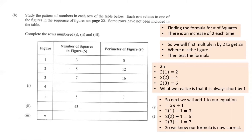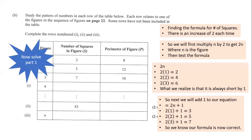We can now determine the number of squares for any figure. For row 1, the number of squares in figure 4 is 2(4)+1 = 9, which matches what we found when drawing figure 4.